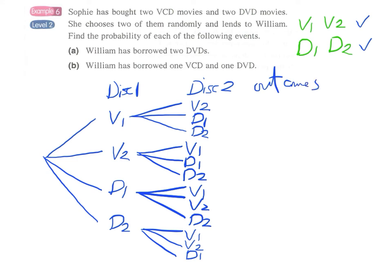We have 4 times 3 equals to 12 possible outcomes. This is our law of multiplication.